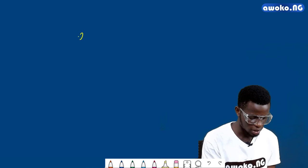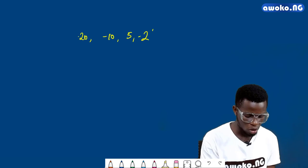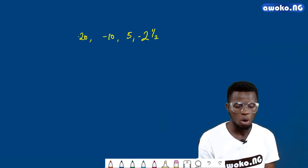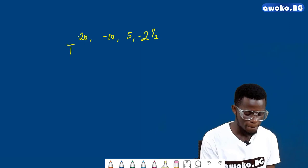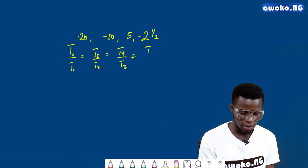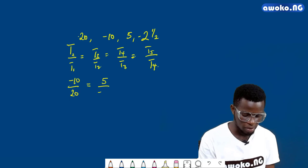Let us consider another sequence to check if it is a geometric progression or not. The sequence here is 20, minus 10, 5, minus 2 and a half. The common ratio is still going to be t2 over t1, which equals t3 over t2, which equals t4 over t3, which equals t5 over t4. So t2 over t1 is minus 10 over 20.